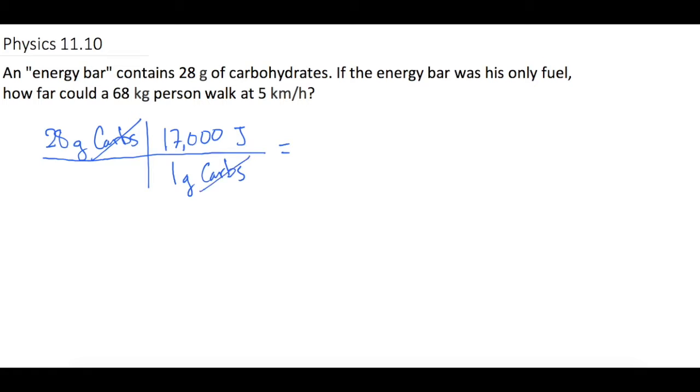The grams of carbohydrates cancel and we'll be left with joules. So we have 28 times 17,000 which is 476,000 joules. He has this much energy to work with when he's walking.